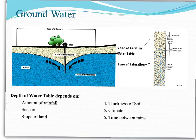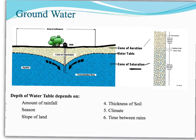Here we have the diagram that shows us the different zones of groundwater. The part that sticks out the most is our aquifer — 'aqua' meaning water. It's filled up with water, or — wait for it — saturated with water. Therefore, this is our zone of saturation. Our zone of saturation holds up our water table, and the water table also serves as the dividing line between our zone of saturation and our zone of aeration.